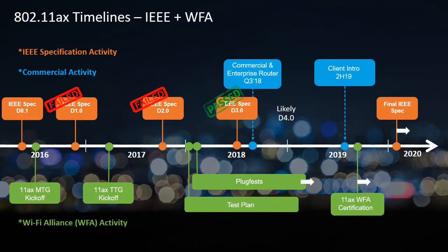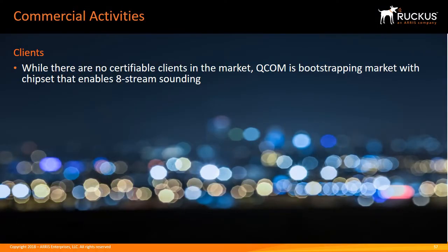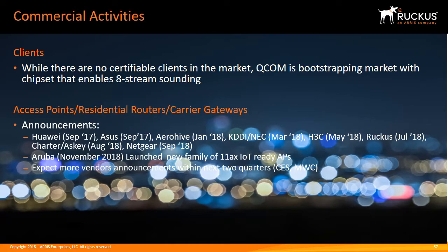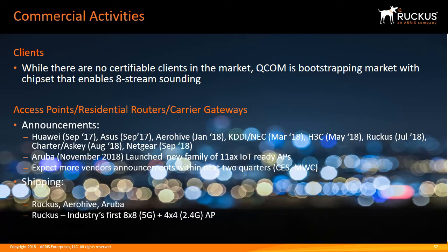Commercial activity has already started, with Ruckus and other Wi-Fi companies announcing 11ax APs. 11ax, or Wi-Fi 6, will be a profound change in the Wi-Fi industry. It will bring faster speeds in the 2.4 and 5 GHz bands, increased range, better performance in dense environments, and enhanced power efficiency. While there are no certifiable clients in the market yet, Qualcomm is bootstrapping the market with chipsets enabling 8-stream sounding. Several companies have already started shipping 11ax APs, including Ruckus, Aerohive, and Aruba. Notably, Ruckus was the first to market with the industry's first 8x8 5G plus 4x4 2.4G 11ax access point.